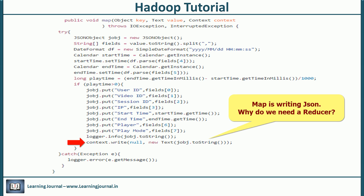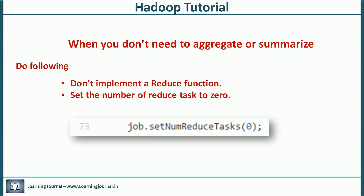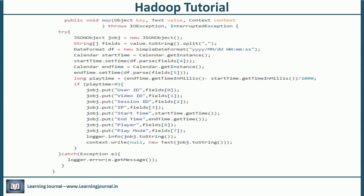You should have noticed two things about this example. We don't need to summarize or aggregate anything, so we should not implement a reduce function and set the number of reduce tasks to zero. In a case of no reduce function, the framework will write the map output to an HDFS file and we will get our JSON file. This is an example where we don't have a reduce part and we achieve our objective using a map-only job.